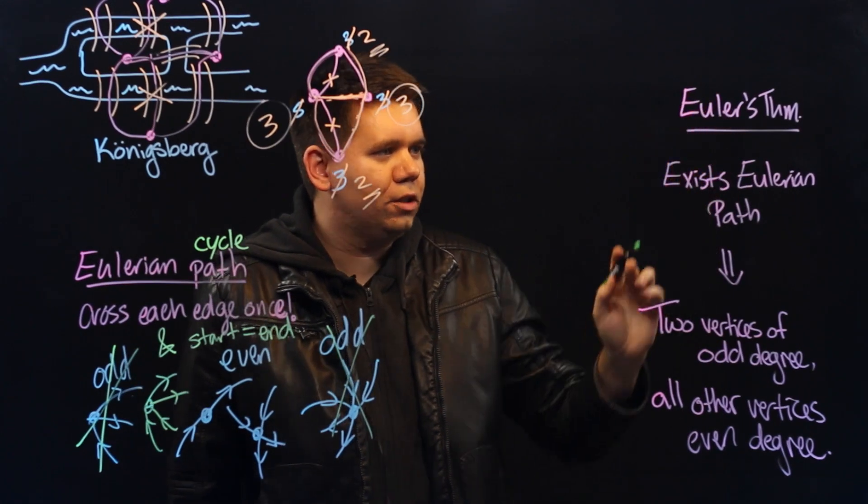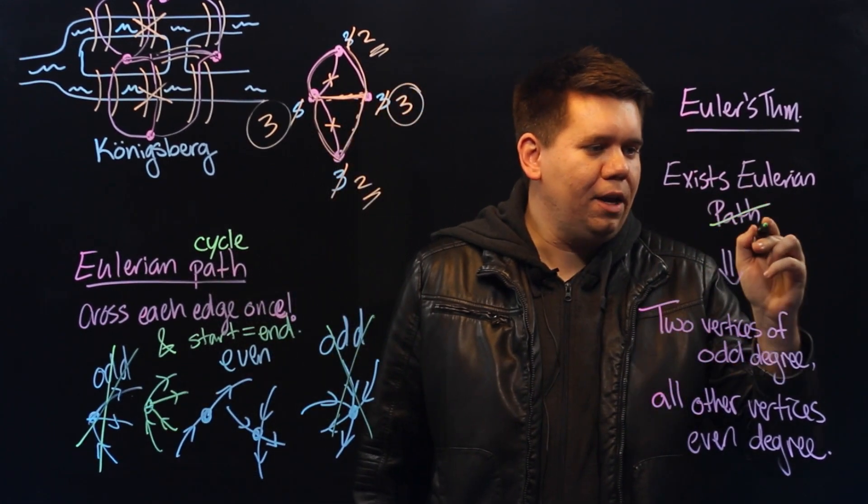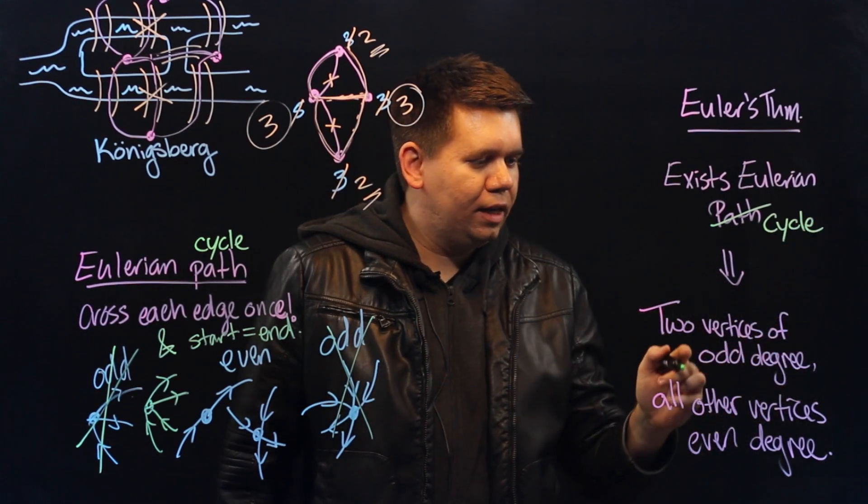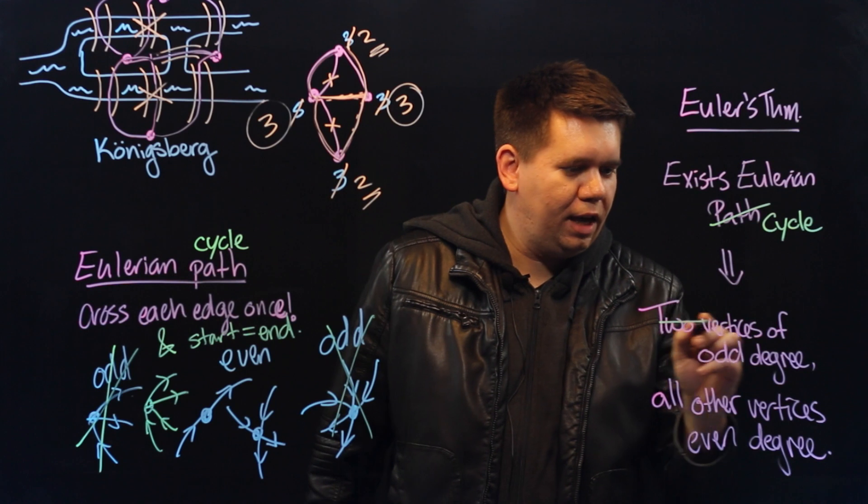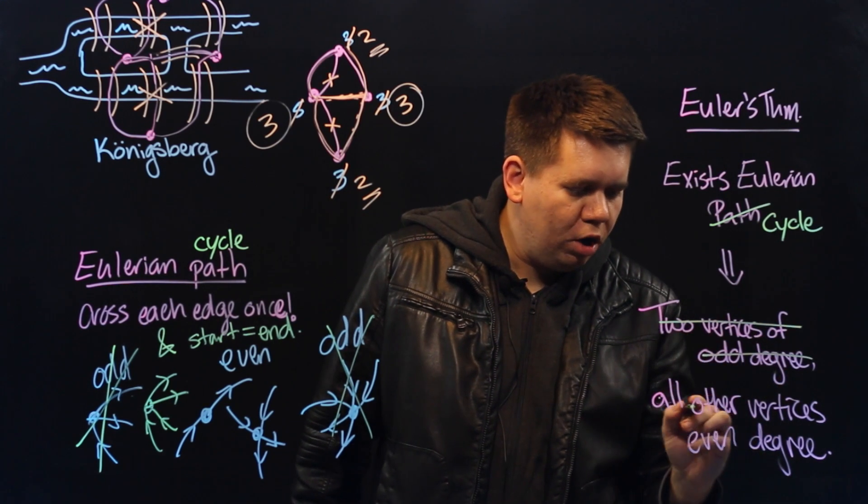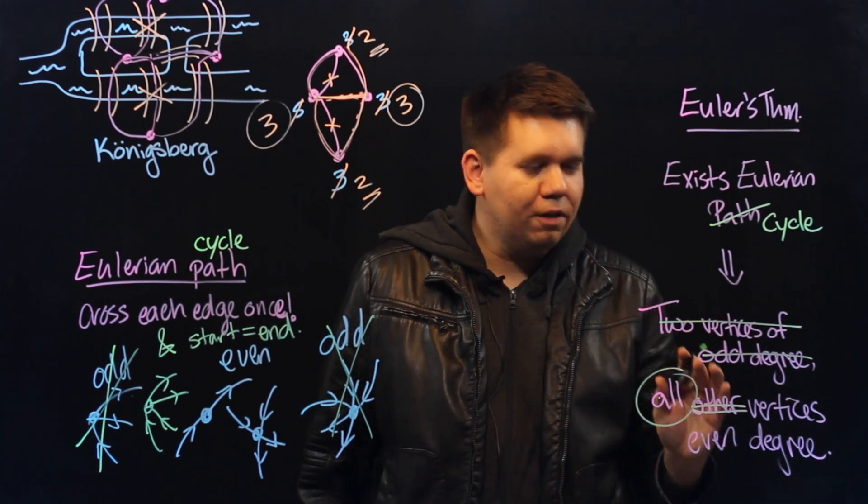Euler's theorem then changes for an Eulerian cycle to say that it's not going to be just two vertices of odd degree, but you're going to have all vertices of even degree.